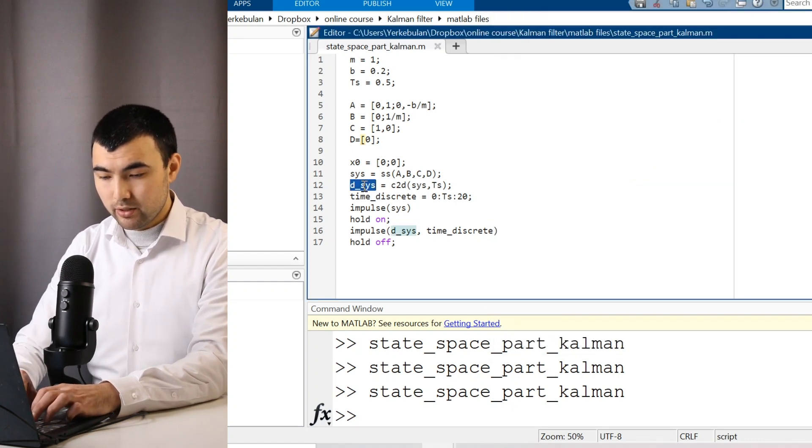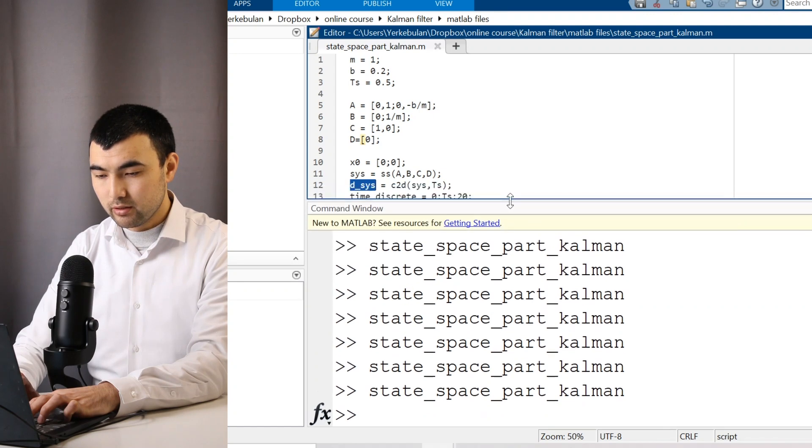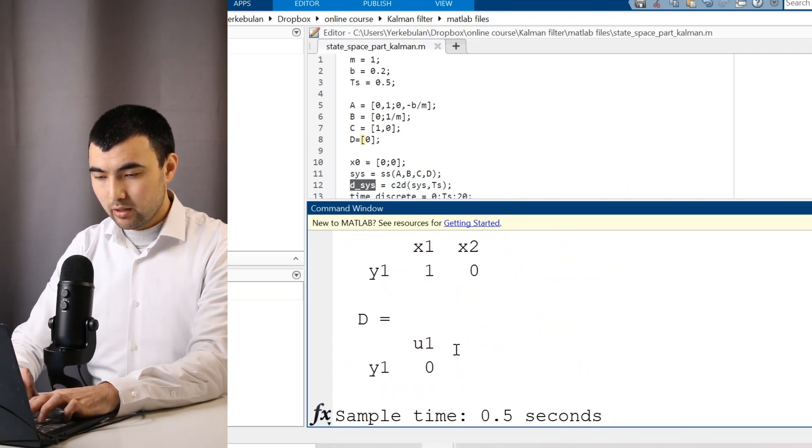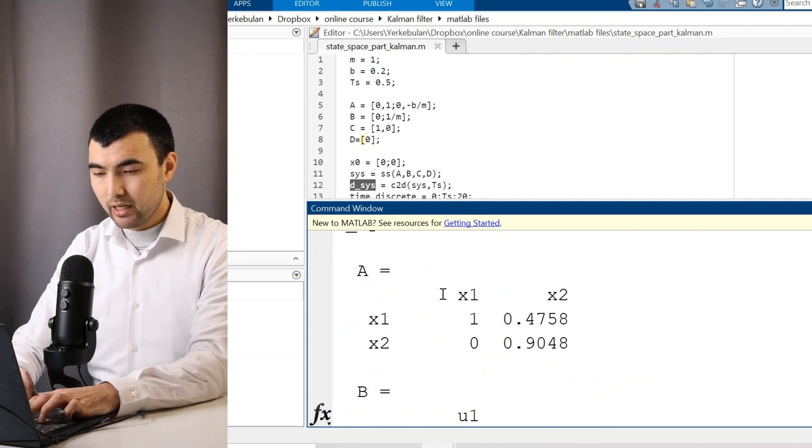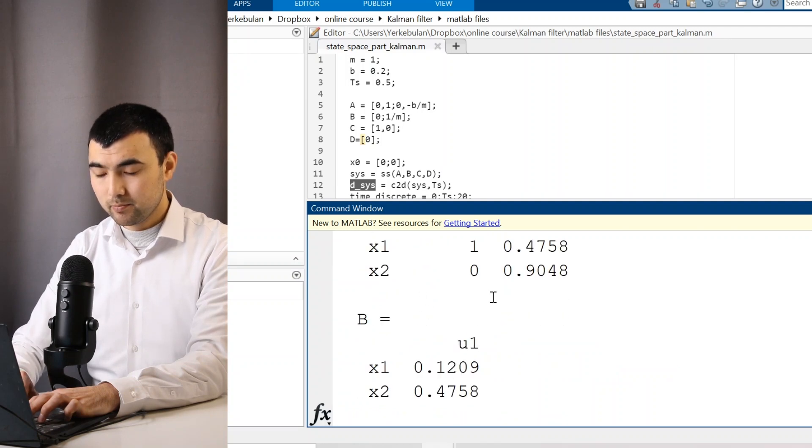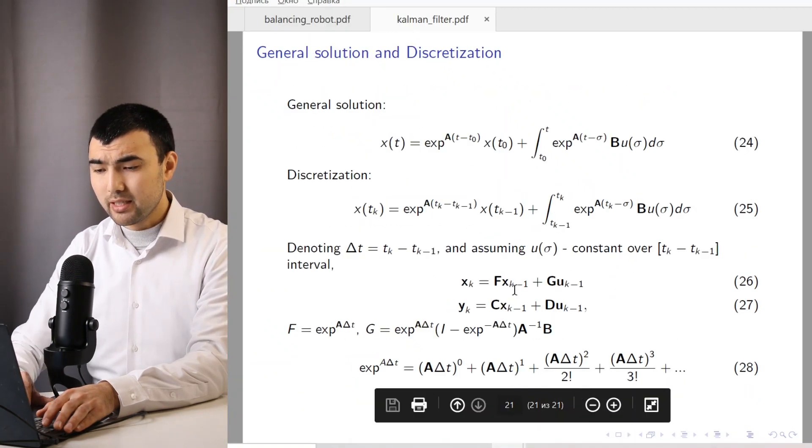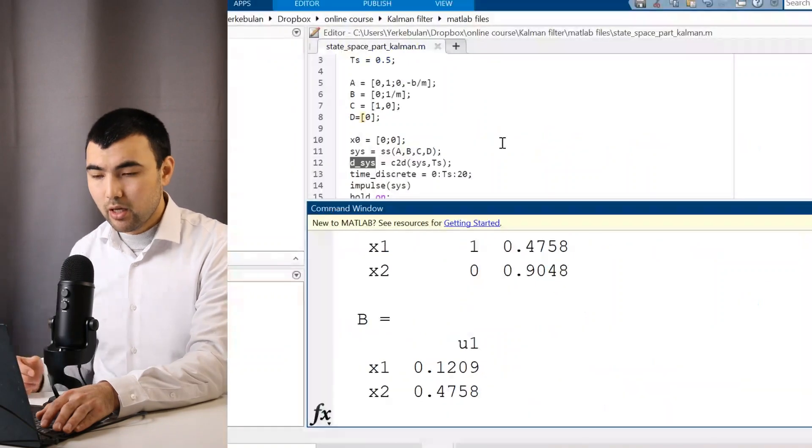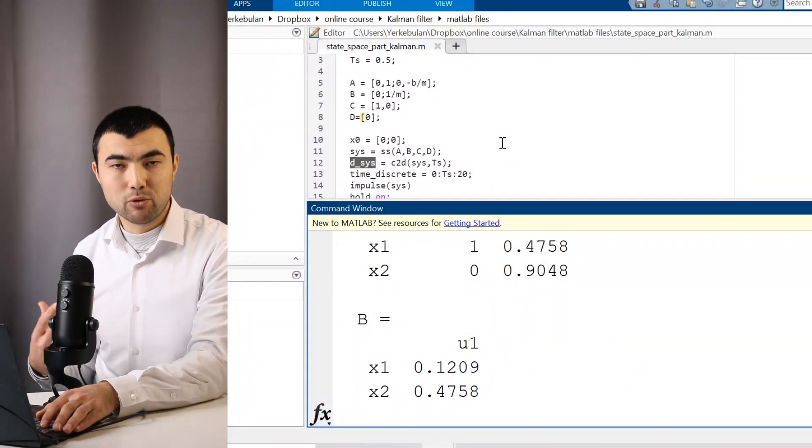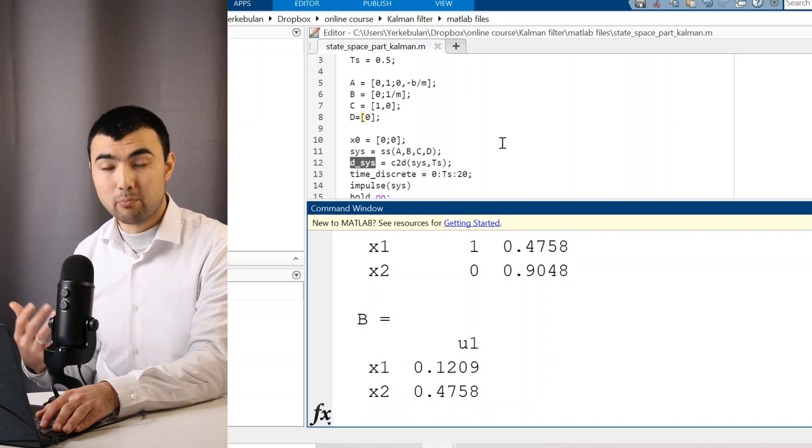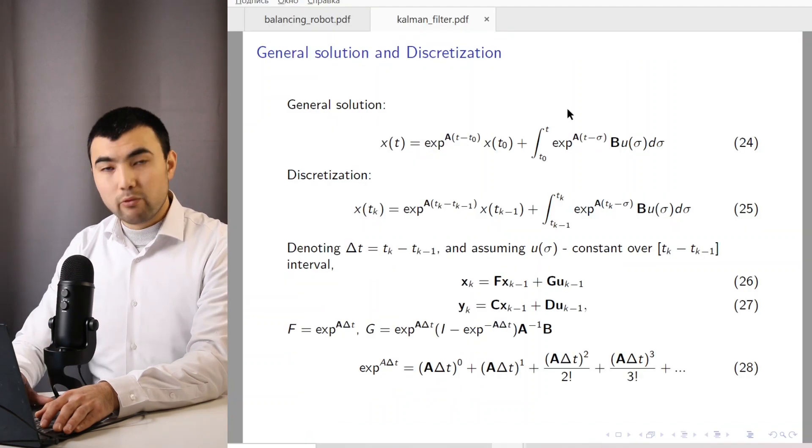Also, if we just print the digital system, so here we have A and B matrices, which are these F and G matrices. So MATLAB automatically computes exponential of a matrix.